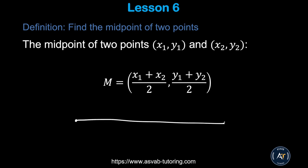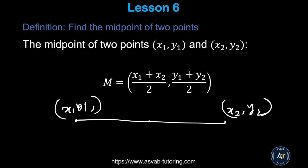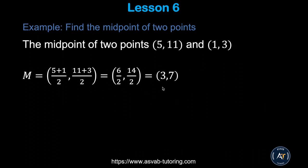Next, we'll find the midpoint of two points. Given points (x1, y1) and (x2, y2), the midpoint (x, y) is found using: x = (x1 + x2) / 2 and y = (y1 + y2) / 2. This type of problem appears frequently on the actual test, so make sure you know it.